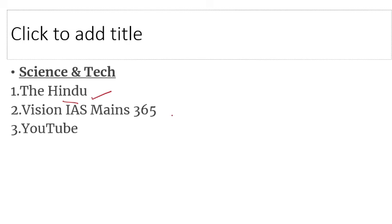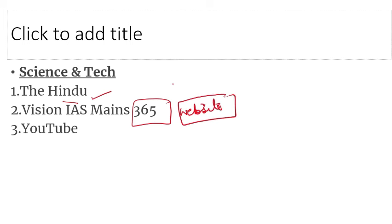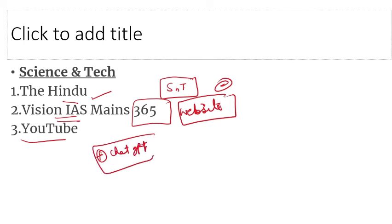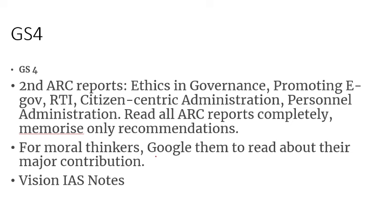For Science and Tech, you will cover The Hindu, plus Vision Mains 365 — you can download it from their website. What you have to do is download the Science and Tech folder from Vision Mains 365, and you can see what has happened in science and tech in the country in the last year. And YouTube — if you have a problem understanding something like cryptocurrency, Bitcoin, blockchain technology — use YouTube extensively. Plus now you can use ChatGPT. Although I restrict my students from over-using it, but if you don't understand anything — if you've read a paragraph and don't understand — you can copy that paragraph into ChatGPT and they will explain things to you.